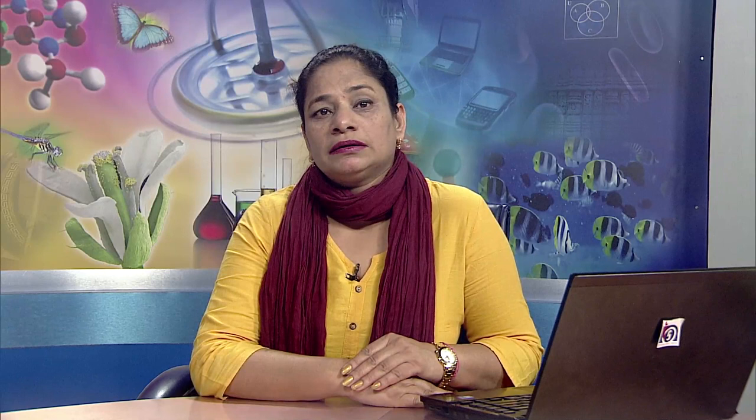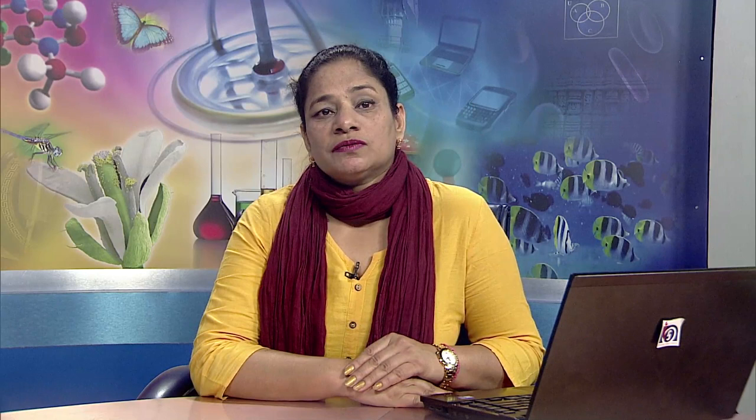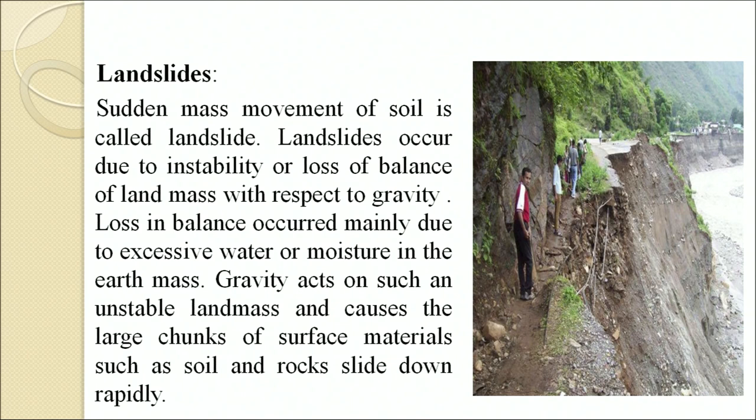Stream bank erosion is the erosion of soil from the banks of streams or rivers due to flowing water. In certain areas, when a river changes its course, the river banks get eroded at a rapid rate. Stream bank erosion damages adjoining agricultural land, highways and bridges. Landslide is a sudden mass movement of soil, occurring due to instability or loss of balance of a land mass with respect to gravity. This loss of balance occurs mainly due to excessive water or moisture in the earth mass, causing large chunks of surface material such as soil and rocks to slide down rapidly.